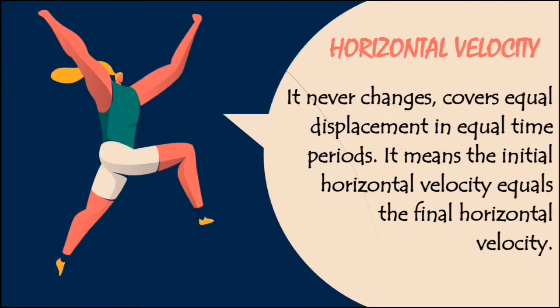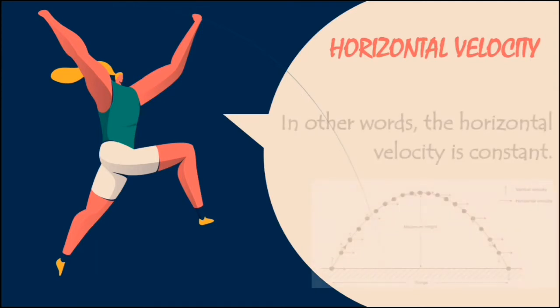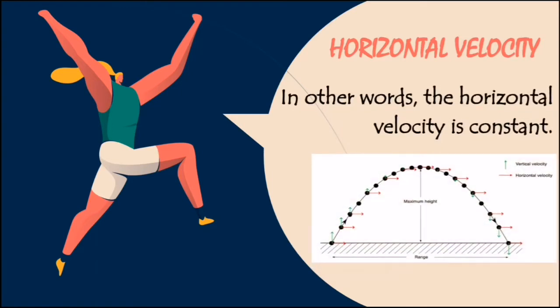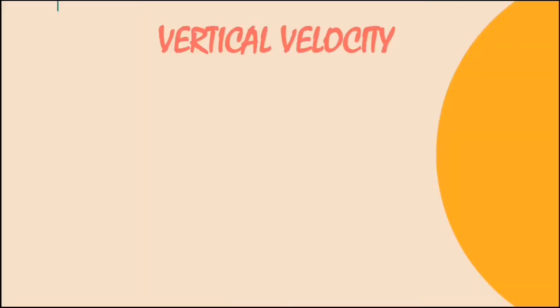Take a glimpse at horizontal velocity. Horizontal velocity never changes, covers equal displacement in equal time period. It means the initial horizontal velocity equals the final horizontal velocity. In other words, the horizontal velocity is constant. Looking at the picture and the arrow, the direction is always the same.